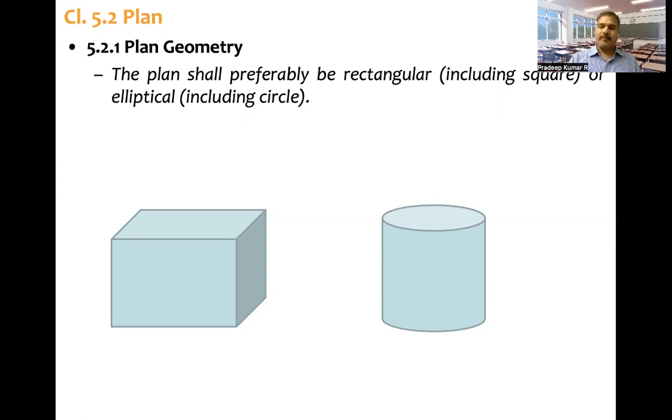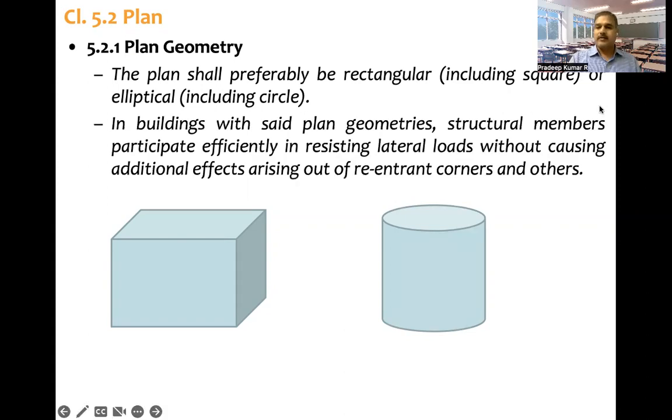In buildings with said plan geometries, structural members participate efficiently in resisting lateral loads without causing additional effects arising out of re-entrant corners. All the frame members and frames will be aligned in two orthogonal directions with proper load path.